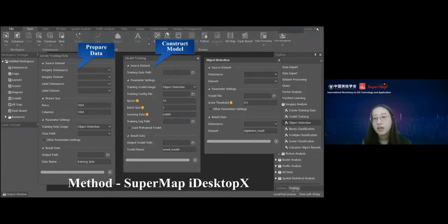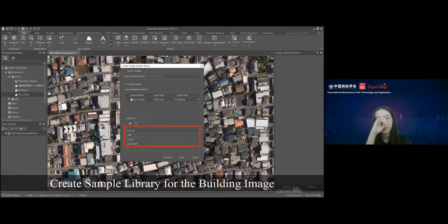After that, we can create the training data and construct our model and apply our model. Our software can support all the other workflows. We can use building extraction as an example to see the whole workflow. First, we have to create a sample library for the building image. Then we need to enter the label set. This means the different building types we want to extract. After that, we need to draw the buildings and we need to choose the building type as it belongs to.